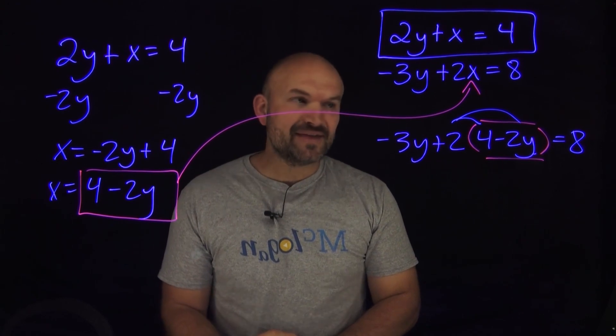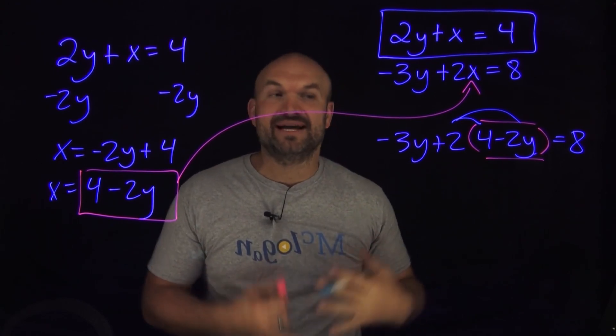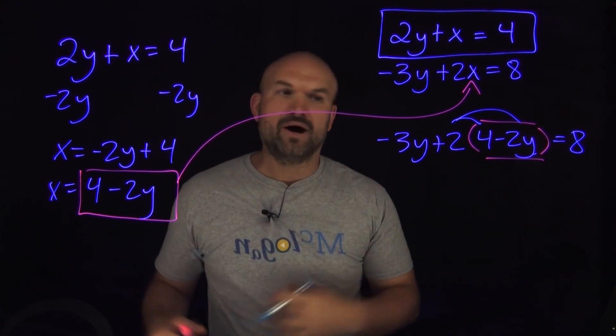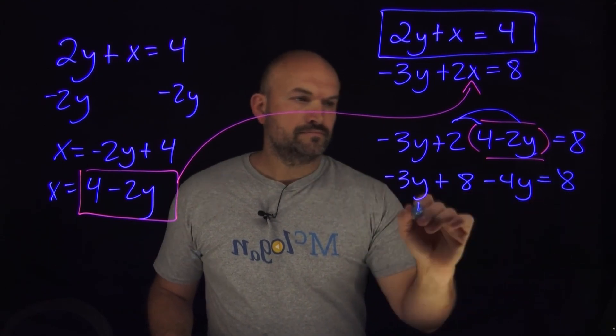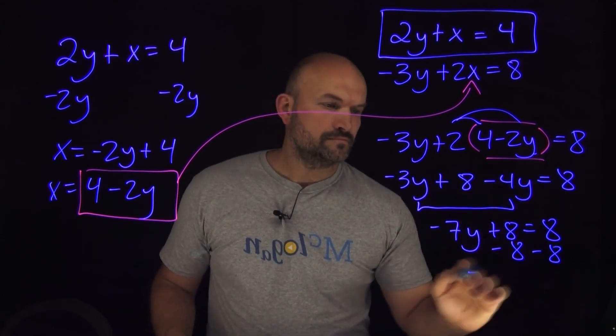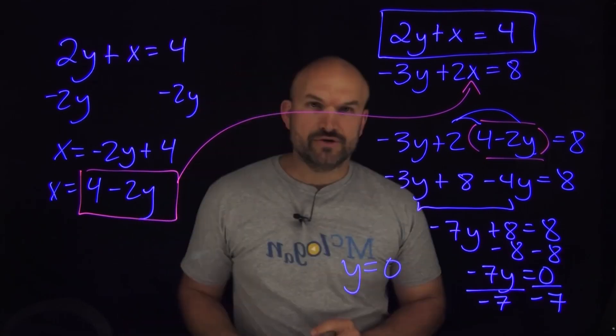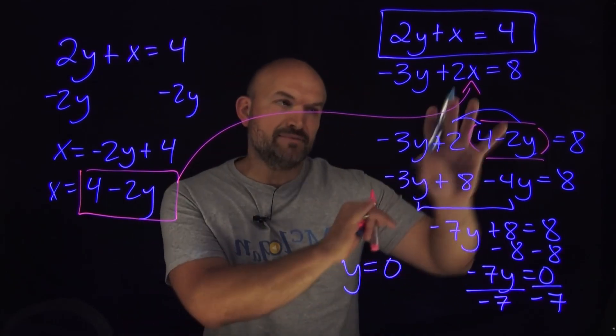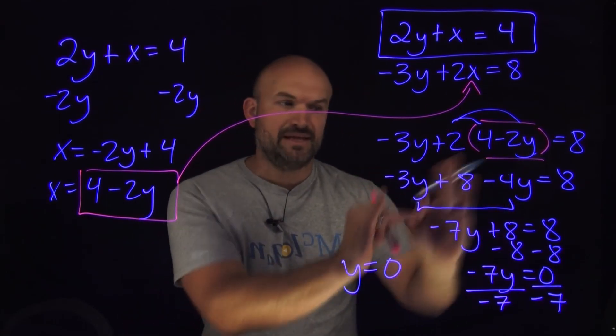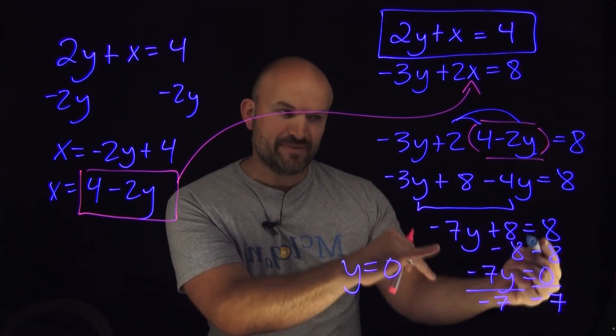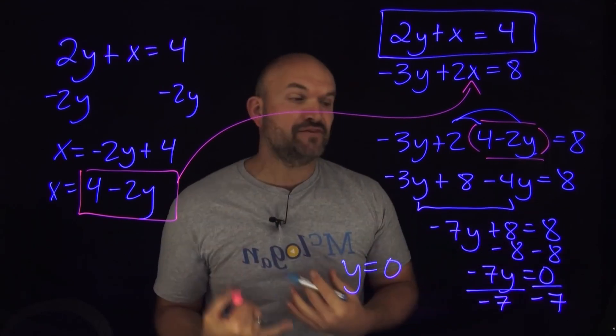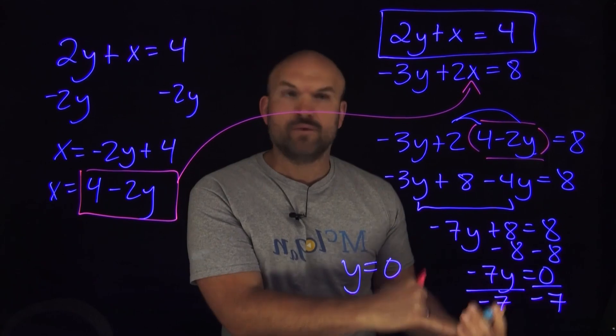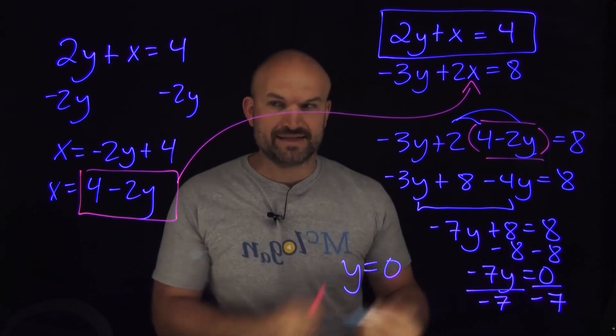But now, when I go ahead and do that, I will now get an equation that I can go ahead and simplify to solve for y. So you can see, just by applying my distributive property, I was able to combine my like terms and get it down to a two-step equation, where then I can use my inverse operations to go ahead and solve for y, right? And therefore, I got y is equal to 0.